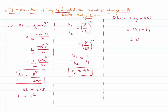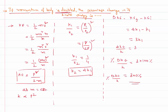The change in kinetic energy is k2 minus k1, which is 4k1 minus k1, equal to 3k1. So delta KE by k1 equals 3. This is the fractional change in kinetic energy. To convert to percentage, multiply by 100, giving 300%. Therefore, the percentage change in kinetic energy is 300%. Thank you for watching, keep coming back for more video lessons.